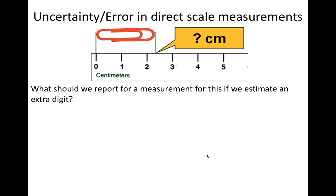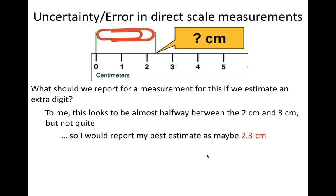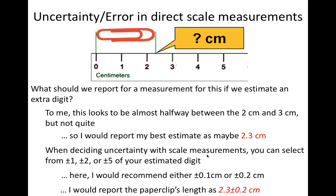So what should we report for the length of our paper clip? There is no single correct answer, but there are some general guidelines to follow. To me, the rightmost edge of the paper clip appears to be about halfway between the 2 and 3 centimeter marks, but a little less than 2.5. I would likely report this as 2.3 centimeters. When choosing to report uncertainty, it's traditional to select plus or minus 1, plus or minus 2, or plus or minus 5 of your estimated digit. I tend to be more conservative, so I would likely report the measurement as 2.3 plus or minus 0.2 centimeters.